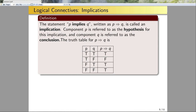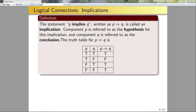An implication statement is like a promise. If I promise you that if you do P, then I will do Q: if you kept up your part of the deal and I did what I promised, then I upheld my promise and the implication is true. But if you kept up your part and I didn't, then I broke my promise. On the other hand, if you don't keep up your part of the deal, it doesn't matter whether I kept mine — I'm not violating my promise, so the implication is trivially true. This is what's called vacuously true.